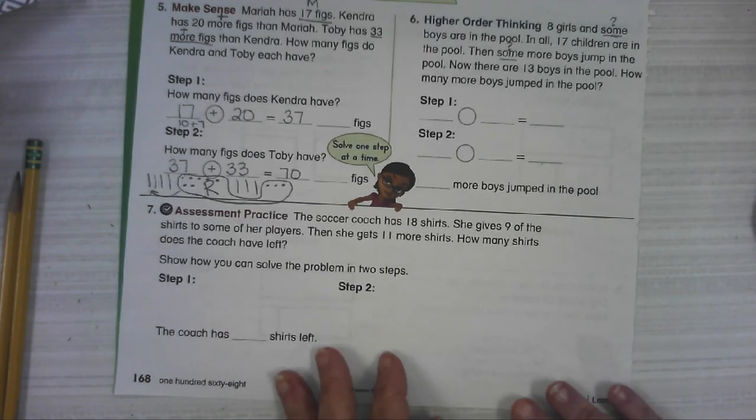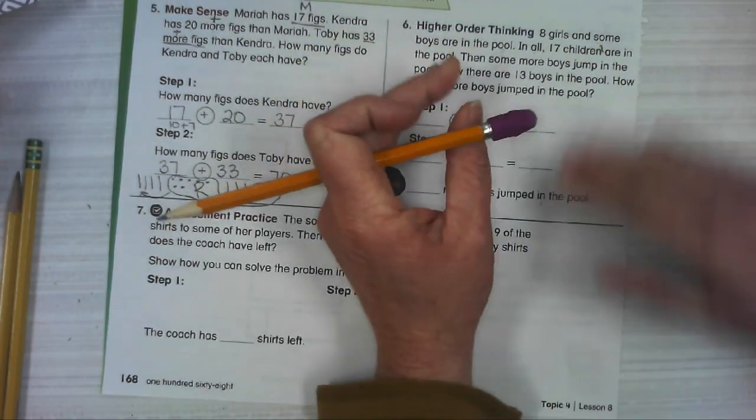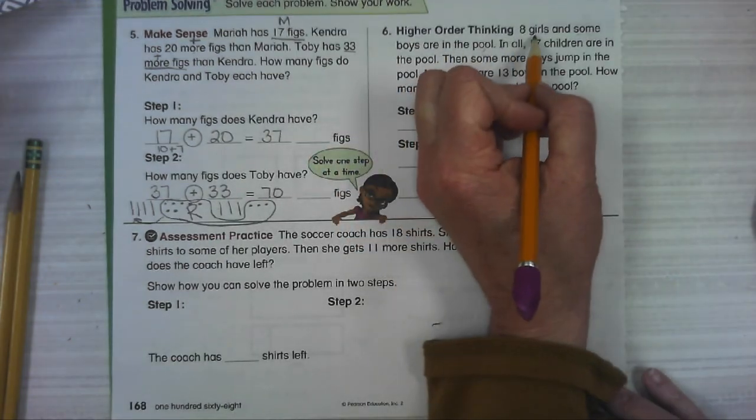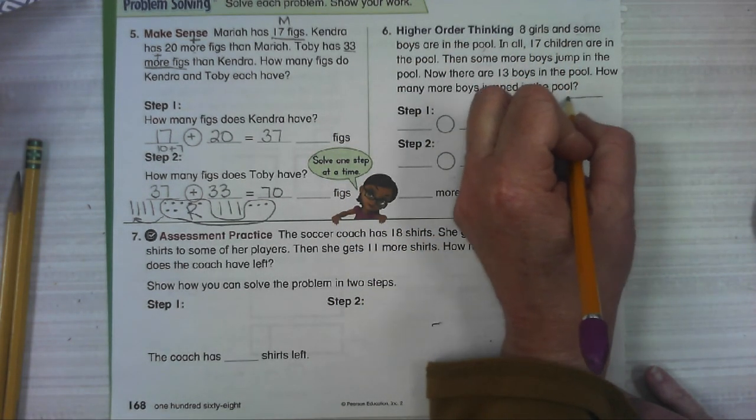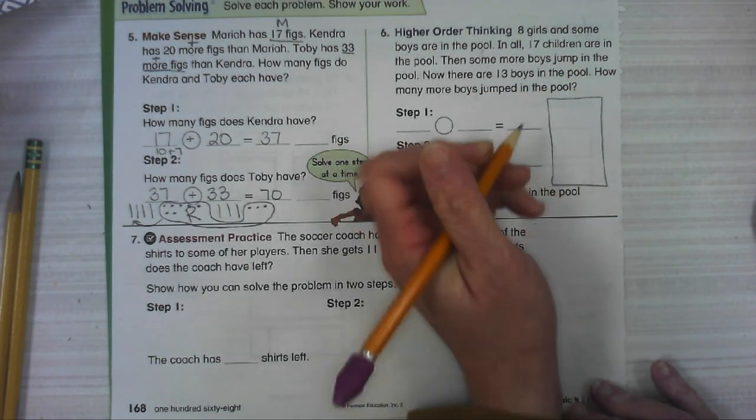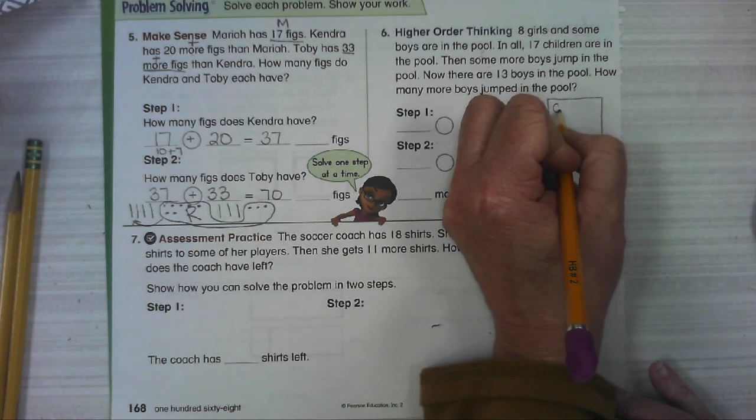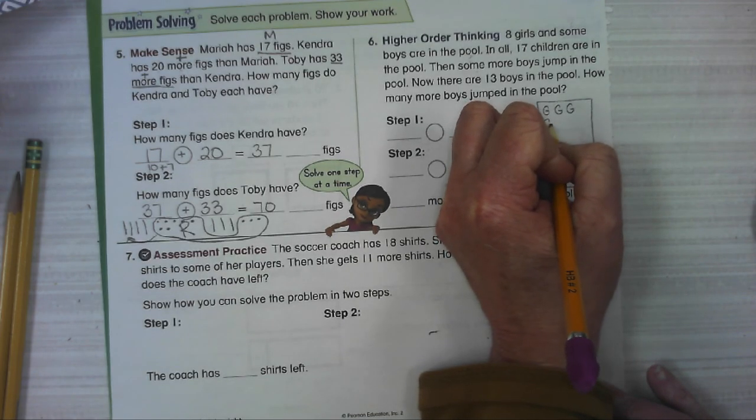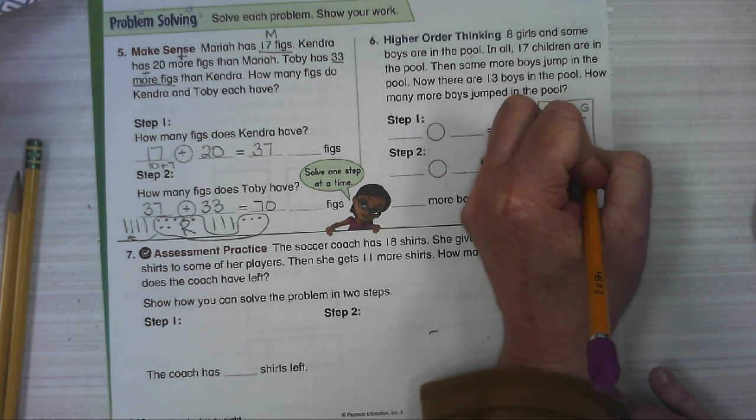All right. Number six. I should have erased these before I started. All right. Number six says eight girls and some boys are in a pool. Draw our swimming pool. And we know we've got eight girls. So I'm going to put eight G's. One, two, three, four, five, six, seven, eight.